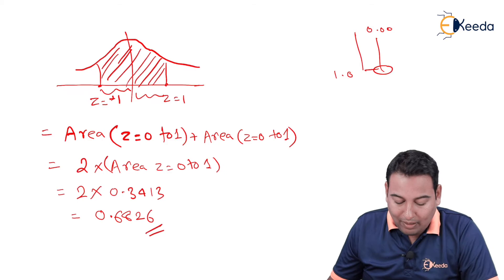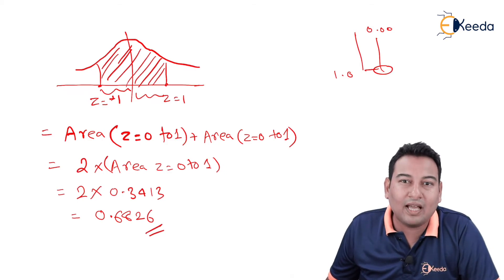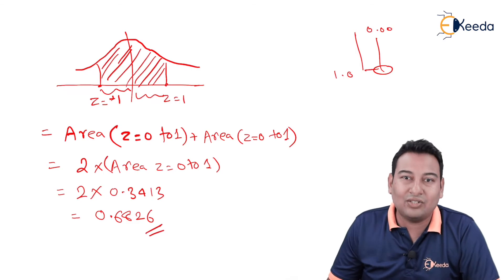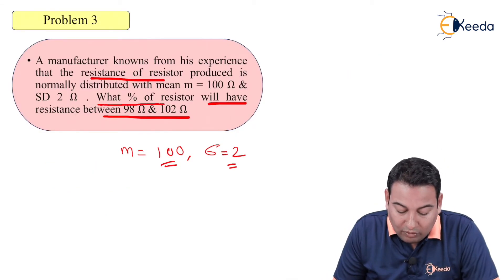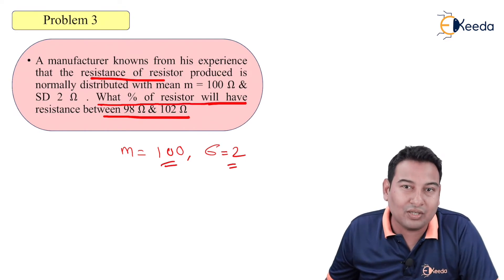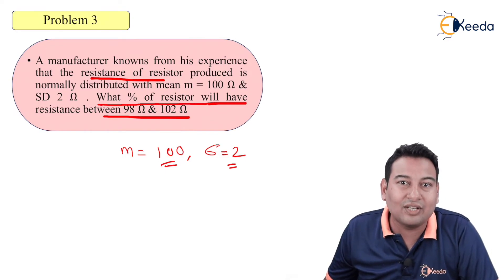This is the probability that the resistance will lie between 98 ohms and 102 ohms. Let's check what is asked in the problem. In the problem it is asked what percentage of resistors will have resistance, that means percentage is asked.